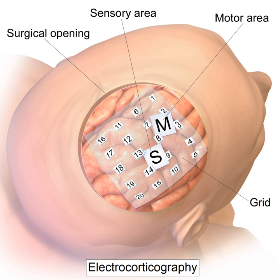Since its development in the 1950s, ECoG has been used to localize epileptogenic zones during presurgical planning, map out cortical functions, and predict the success of epileptic surgical resectioning. ECoG offers several advantages over alternative diagnostic modalities: flexible placement of recording and stimulating electrodes; can be performed at any stage before, during, and after surgery; allows for direct electrical stimulation of the brain identifying critical cortical regions; and greater precision and sensitivity than EEG scalp recording, with superior spatial resolution and signal-to-noise ratio due to closer proximity to neural activity.